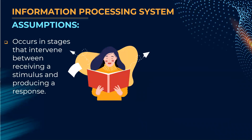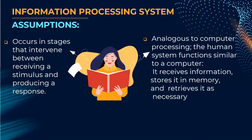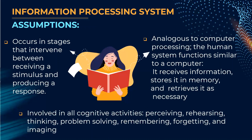What are the assumptions? Processing occurs in stages that intervene between receiving a stimulus and producing a response. It is analogous to computer processing, meaning that the human system functions similarly to a computer — it receives information, stores it in memory, and retrieves it as necessary.